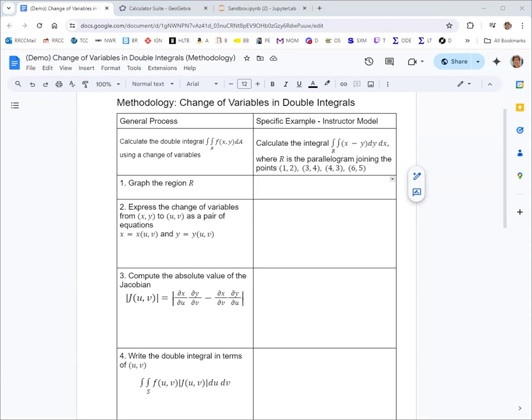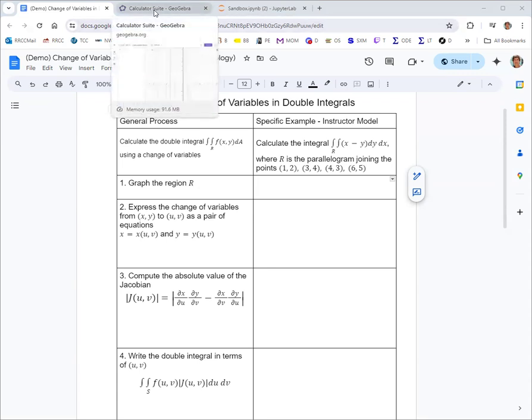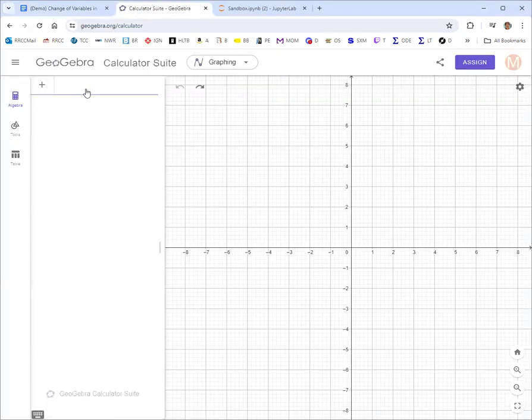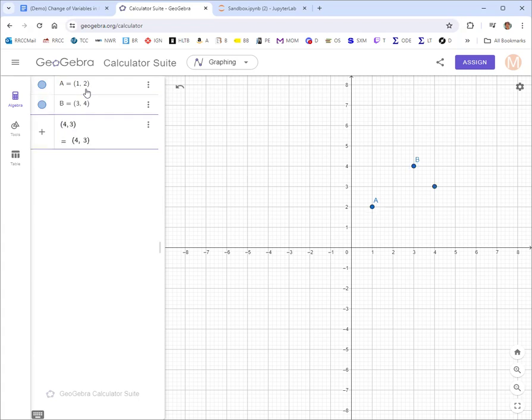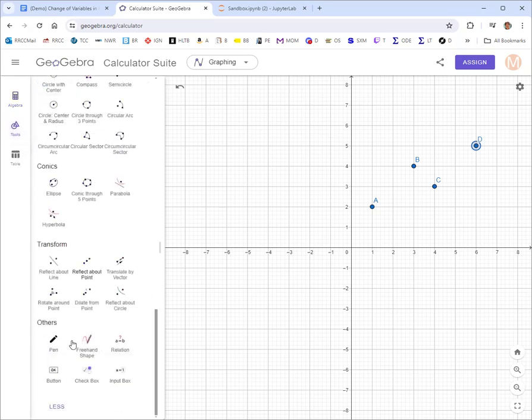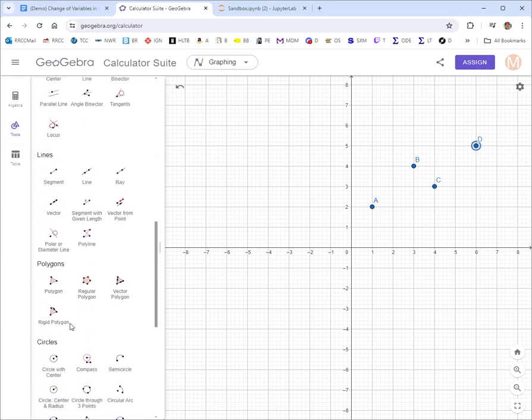If you're not given a graph for the region, I think it's a good idea to start by graphing it. I'm going to use GeoGebra to graph this since it allows me to easily input the coordinates of the points. Enter them separated by a comma in parentheses, then go to the tools and there is a polygon option. Click on that and just click on each of the points. It creates the parallelogram for you.